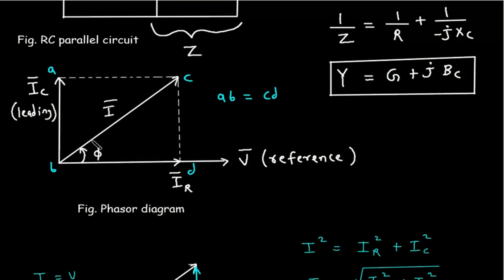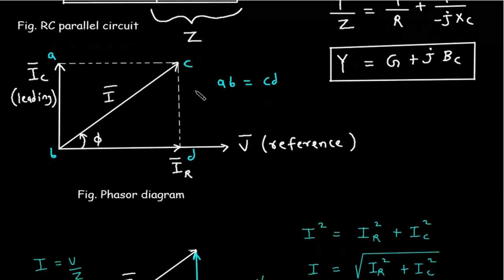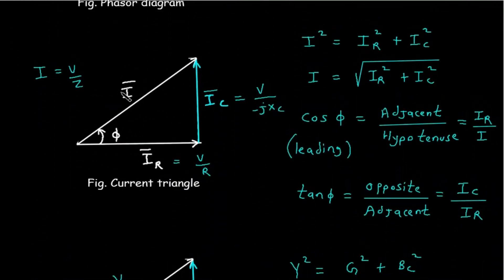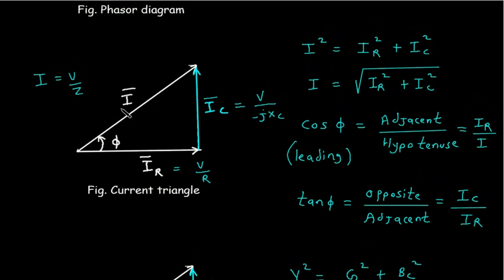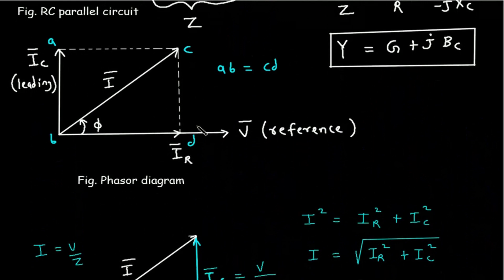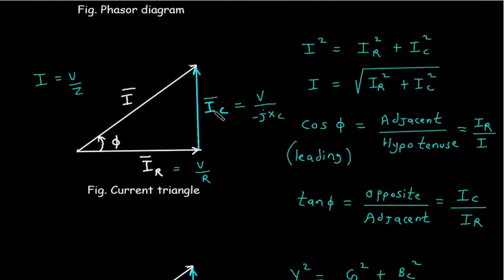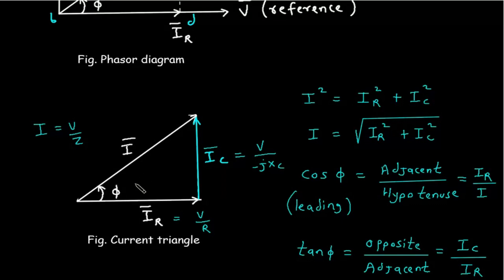From this phasor diagram, we can say that IB is equal to CD, so we can replace CD by AB. From this phasor diagram, we can draw a current triangle, an admittance triangle, and a power triangle. The current triangle will have I phasor as the hypotenuse, with IC and IR as the other sides.